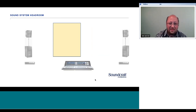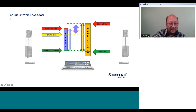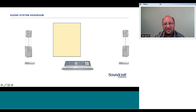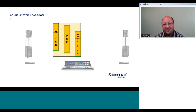Up till now the sound system was shown as a single unit, but that's not the case. We have multiple units in the system — hence the word 'system.' Keeping it simple: we have a mixer, a DSP unit such as a loudspeaker management system like a DBX DriveRack, an active crossover, some graphic equalizers, compressors, limiters, and an amplifier. Nowadays a lot of this processing is built into the amplifiers, simplifying things considerably.